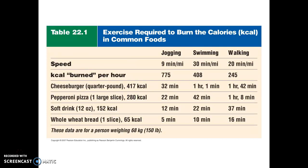Here we see a chart which compares the amount of energy received from certain food items and the amount of energy spent with certain activities. Using this chart, we can figure out how long we can do certain activities based on the food item consumed. A slice of pepperoni pizza at 280 kcals is equivalent to about 42 minutes of swimming or 22 minutes of jogging. A cheeseburger at 417 kcals is equivalent to 1 hour and 42 minutes of walking. I want you to see the relationship between energy received from food and energy spent performing activities.